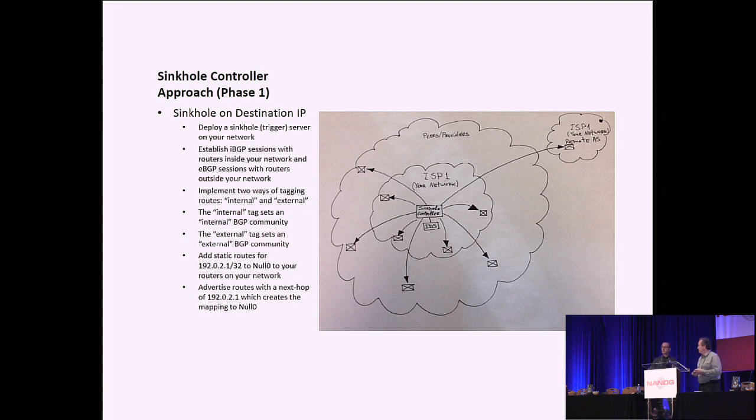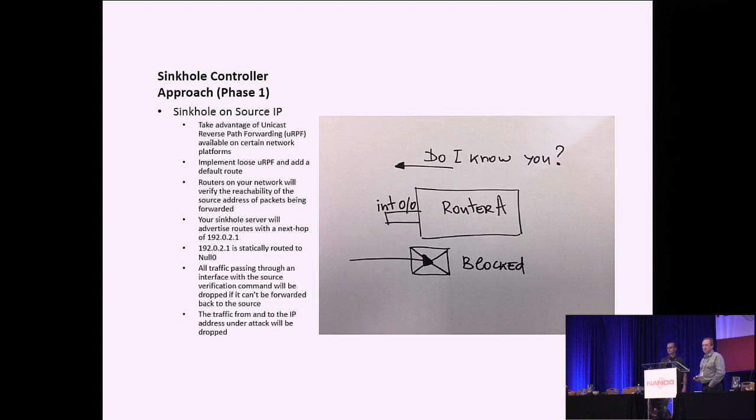Yes, and the way that works very high level is on your sinkhole controller you inject BGP routes with a special tag, black hole tag, that tells your router across the network to null route the traffic for the IP address under attack. To continue, as part of the sinkhole implementation, you have the capability to sinkhole or black hole IP addresses based on the source. And by taking advantage of unicast reverse path forwarding, which is available on certain platforms. The way it works is traffic comes in on the interface and if it gets dropped, if the router doesn't have a route back to the source IP address.